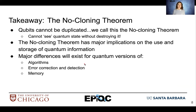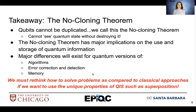Some important takeaways: qubits cannot be duplicated, and we call this the no cloning theorem. One of the key reasons we can't copy qubit state is because we can't see that qubit state without destroying it — it's almost like measuring it. Once we measure state, we lose superposition. The no cloning theorem has major implications for how we work with quantum information and how we store it. Because of the no cloning theorem, we'll have to rethink our algorithms, our error correction and detection schemes, and our memory schemes so that we can use the aspects of superposition associated with quantum state without losing it. It'll be very different from the implementations we see in classical computation.